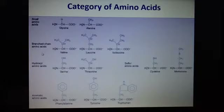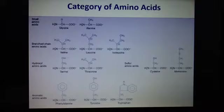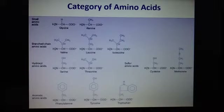The branched chain amino acids look like they're branching, so that's easy to identify. We need to remember some of the characteristics of these amino acids. For example, leucine is used in the regulation of cell signaling and is important for protein synthesis and other signaling pathways. Remember that leucine is used in cell signaling.